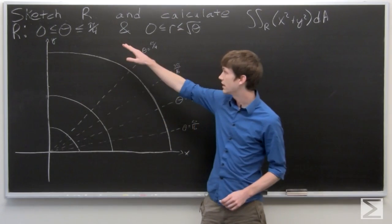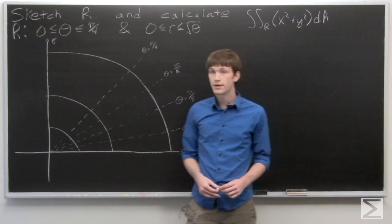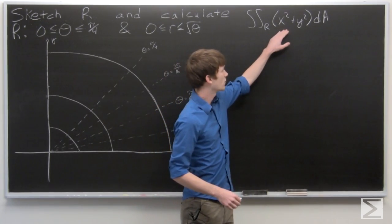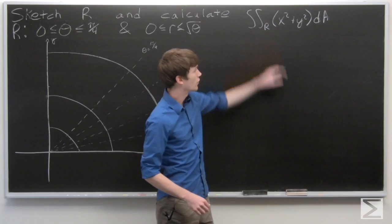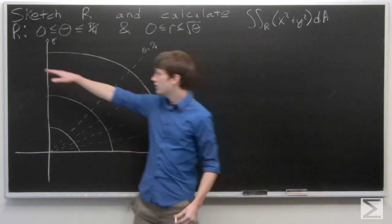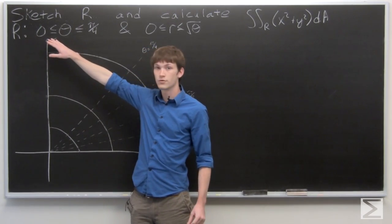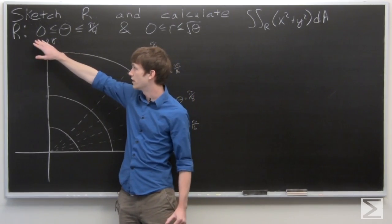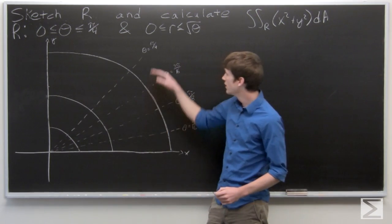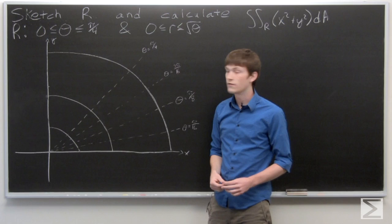In this problem, we're asked to sketch our region R and then calculate the double integral of x squared plus y squared over our region R. We're given that our region R is defined in terms of polar coordinates, where theta runs from 0 to pi over 4, and r from 0 to the square root of theta.